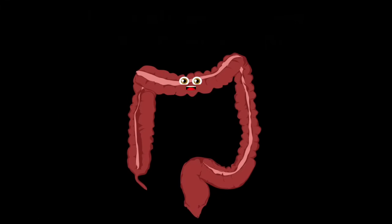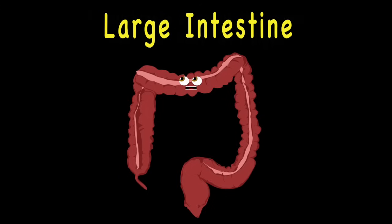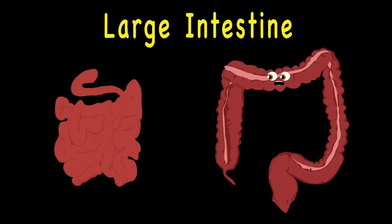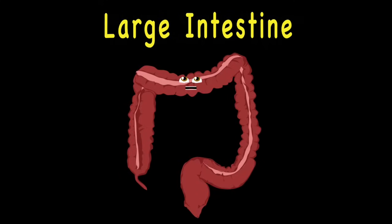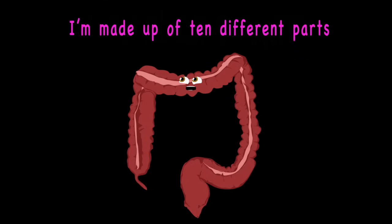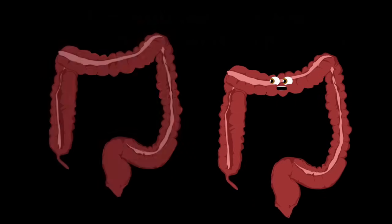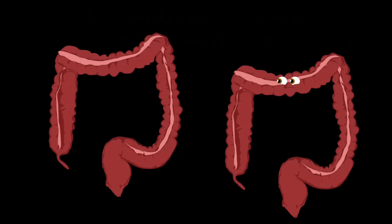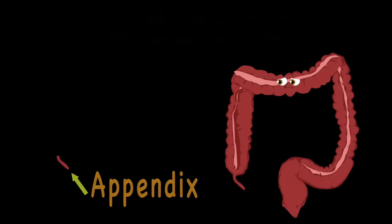I am your large intestine. Though I'm shorter than your small, I'm called your large intestine due to my expanded walls. I'm made up of ten different parts, all connected into one. We'll start at the tip of your appendix.